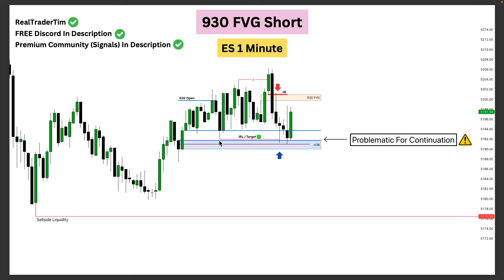Put the majority of your focus on the internal range liquidity and take the majority of your position off once we purge that internal range liquidity. Now, as you can see on the right side, I have labeled this area as problematic for continuation. If you're looking for a move down to this sell-side liquidity — the low made after the CPI release — you do not want to see this type of reaction off of this order block, especially since we're purging liquidity here.